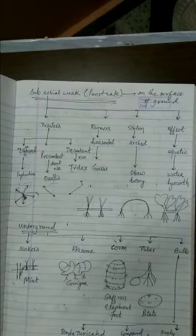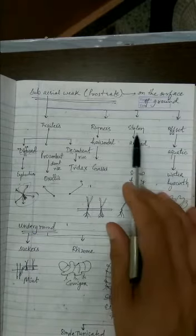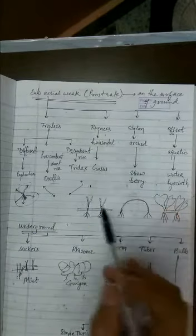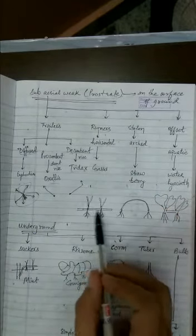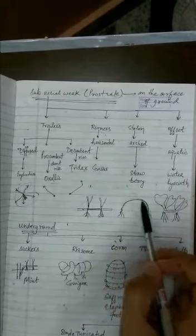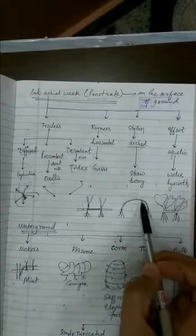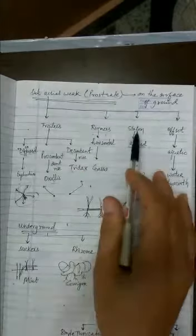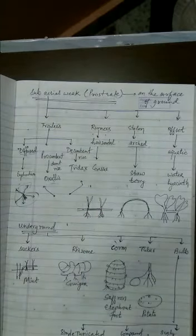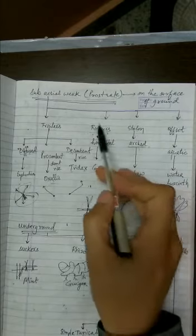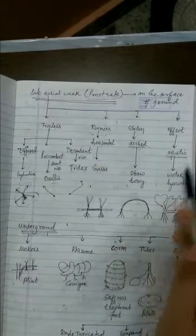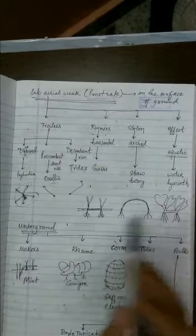Stolons are modified runners — for example, strawberry develops stolons. The only difference between runners and stolons is that runners grow horizontally along the ground, while stolons are arched. Offsets are runners found only in aquatic plants and share the same basic features as runners.